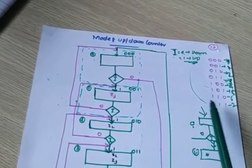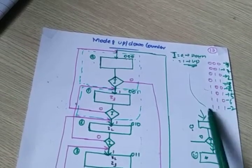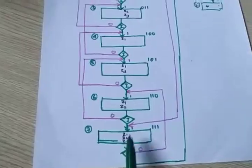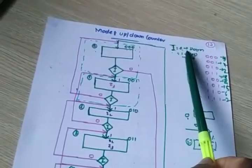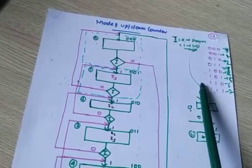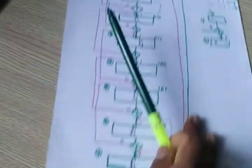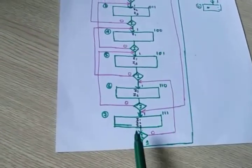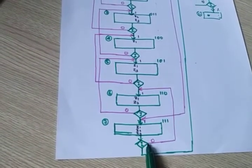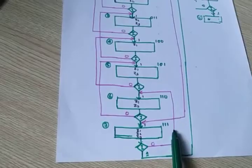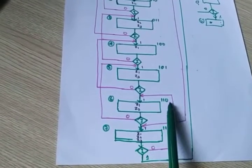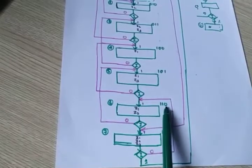Now what about the down counter. Suppose start from 111. If you are in state 111 and i is 0, then down counter. Down counter means it should go to 110. So at state 111, if decision is 0, it goes to 110. That's why I draw it like this — going to 110.